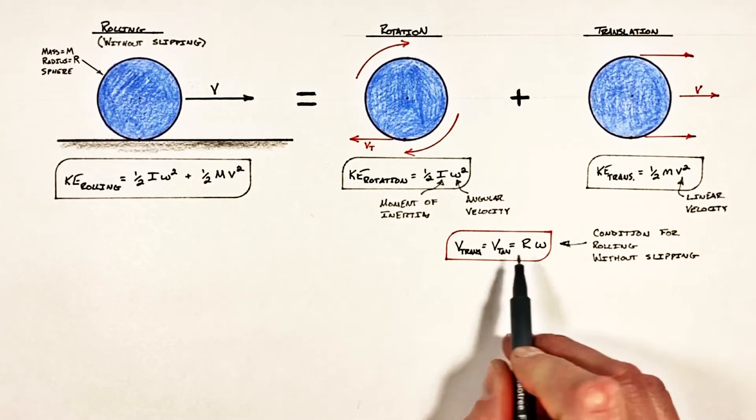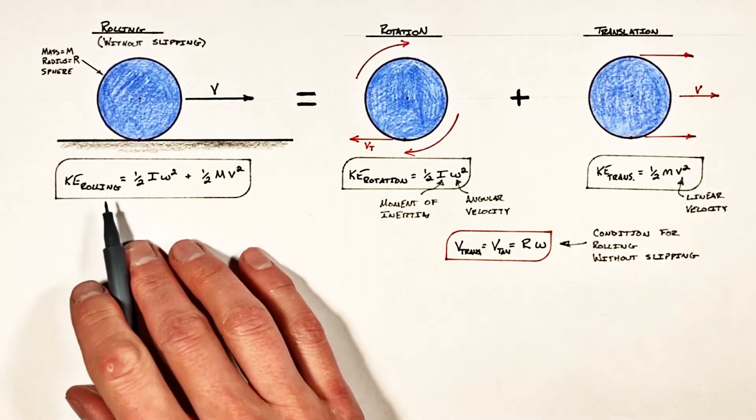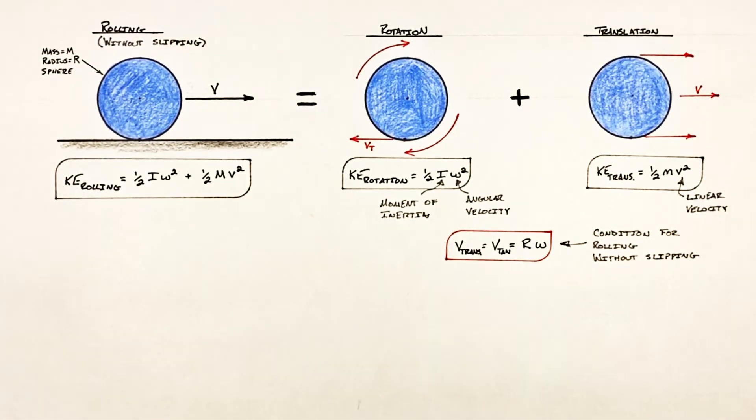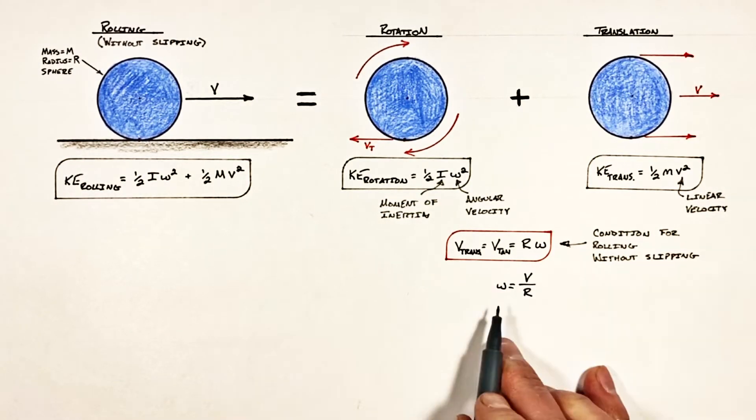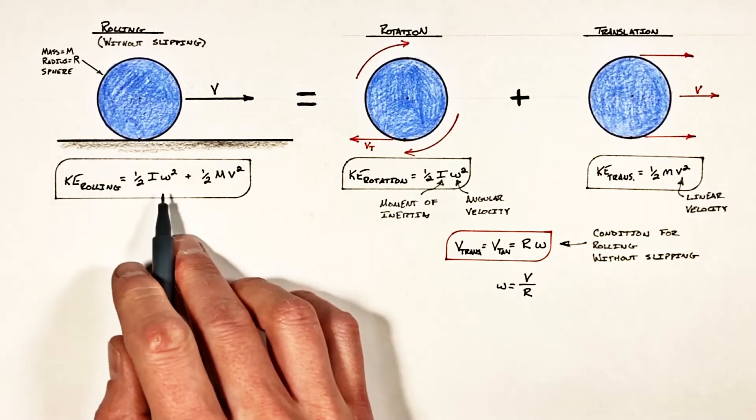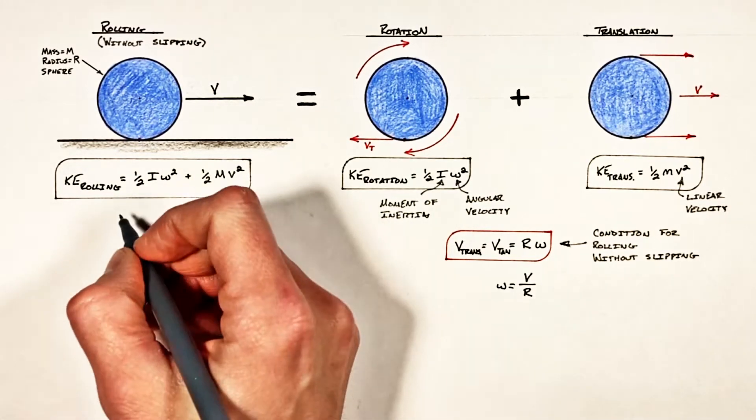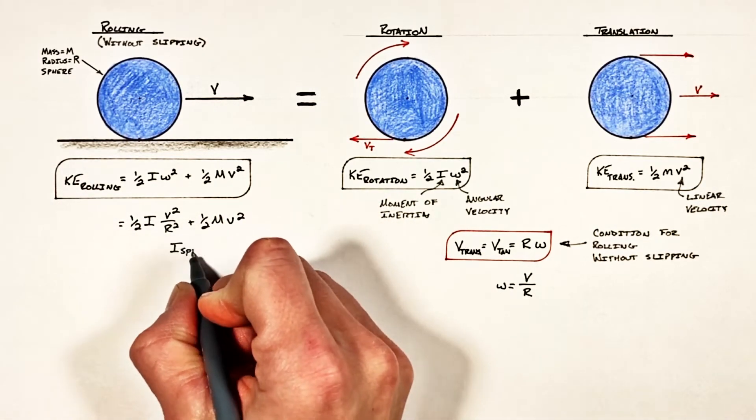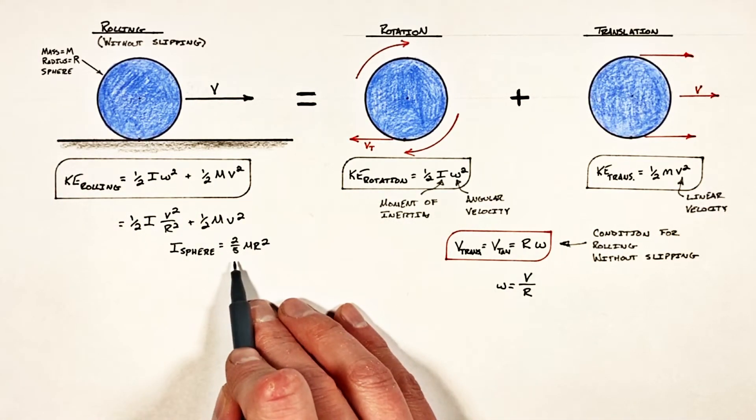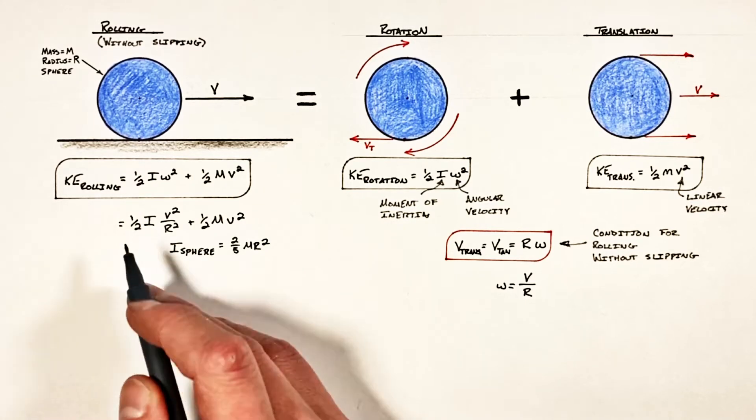So now with this relationship, we can clean up our formula for the kinetic energy of our rolling object. Rearranging this equation for omega, we can substitute this equation in here for angular velocity. And knowing the rotational moment of inertia of a sphere, we can substitute this term in here for our inertia.